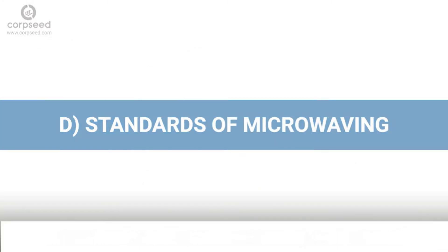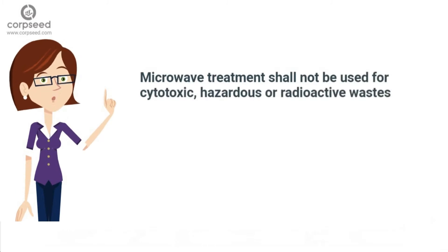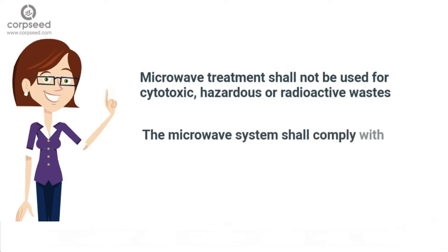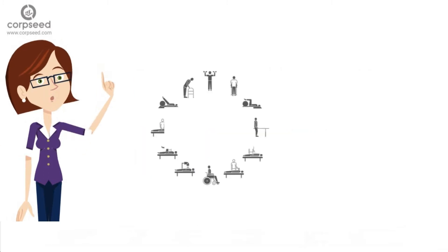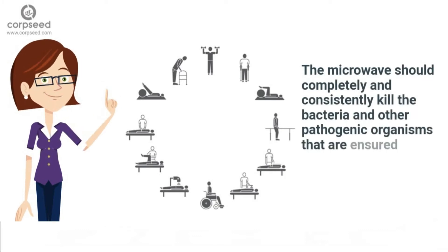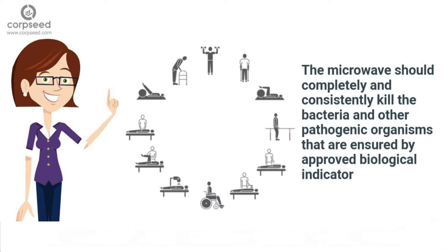Standards for Microwaving: Microwave treatment shall not be used for cytotoxic, hazardous or radioactive wastes, contaminated animal carcasses, body parts, and large metal items. The microwave system shall comply with efficacy and routine tests, and a performance guarantee may be provided by the supplier before operation. The microwave should completely and consistently kill bacteria and other pathogenic organisms as ensured by approved biological indicators at maximum design capacity. Biological indicators for microwave shall be Bacillus atrophaeus spores using vials or spore strips with at least 1×10⁶ spores per strip.